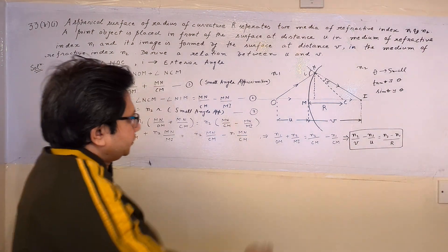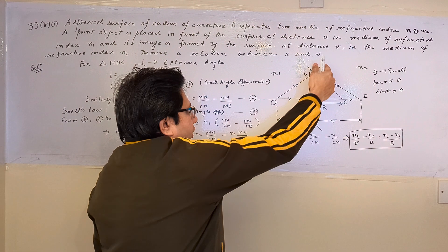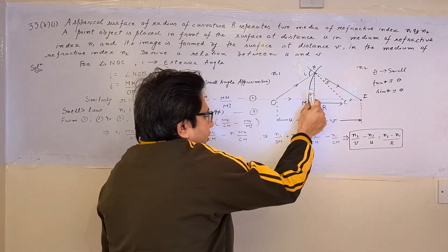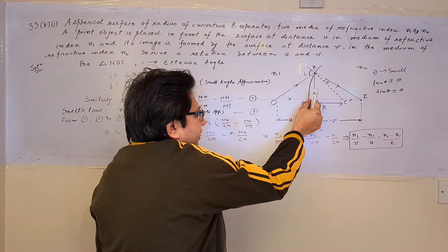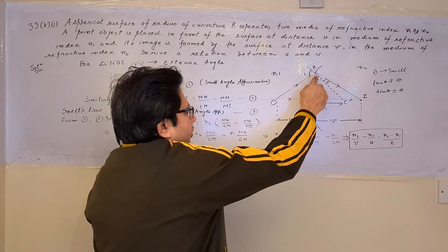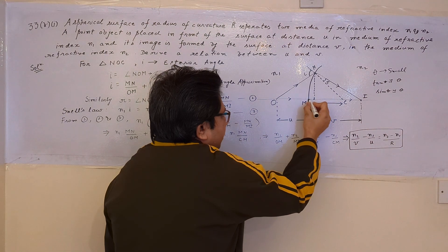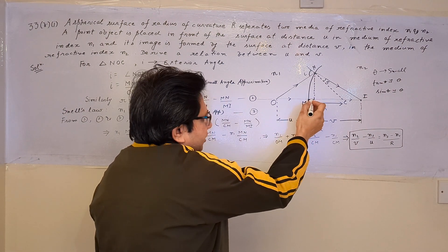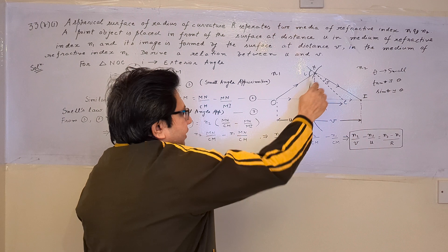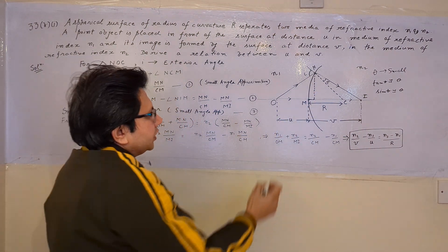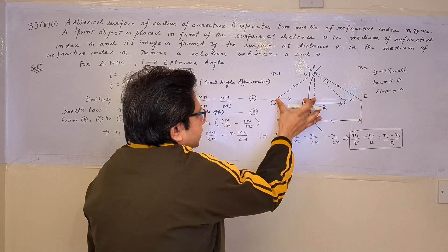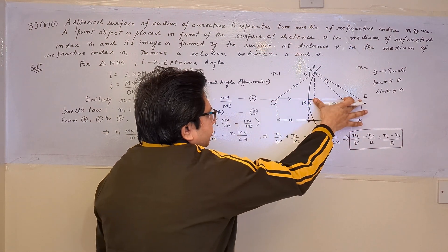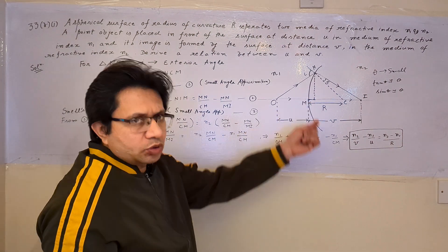From the geometry of this figure, if the curvature is small, then the normal from point N to this axis is very nearly equal to point M. So we can neglect this distance, assuming these two points are at a very small distance from each other. This allows us to use this particular triangle, where the distance from O to this point is u, and from here to image is v.